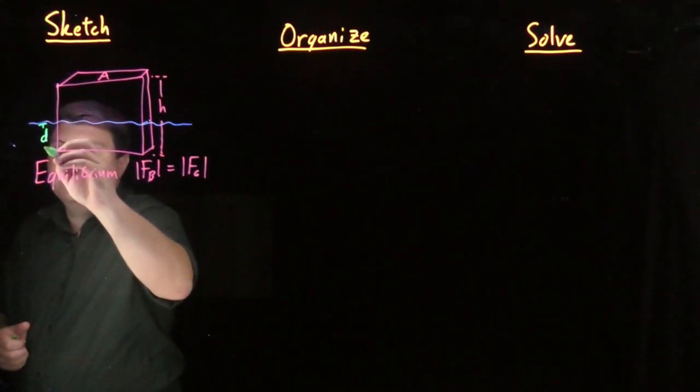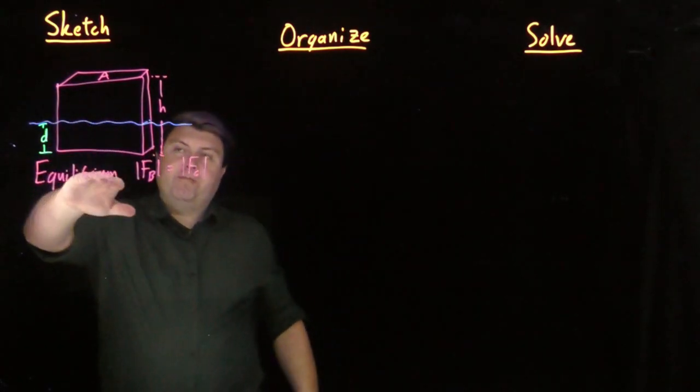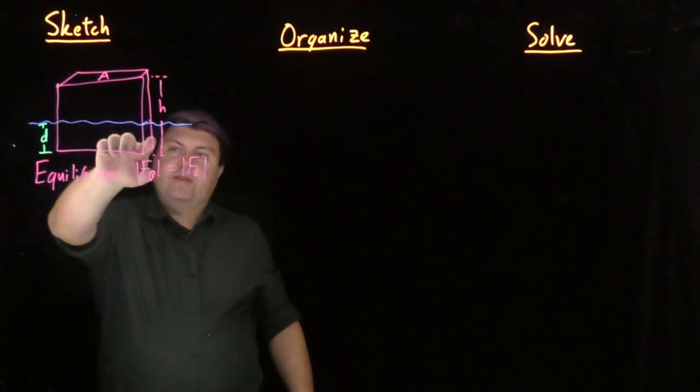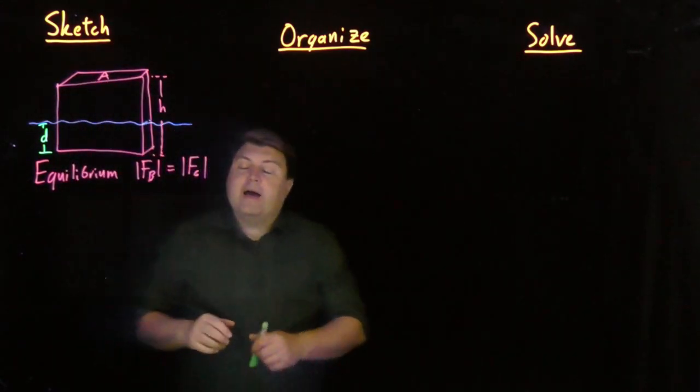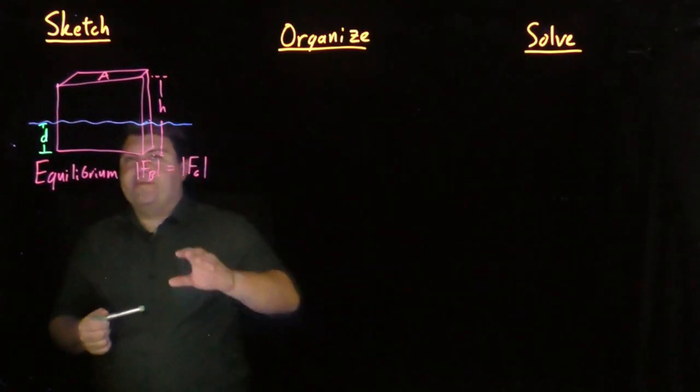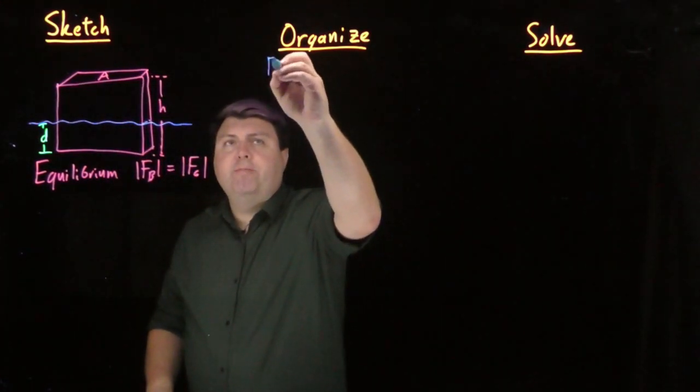So our styrofoam is going to be some amount of depth underneath the water which we can call this d. So if we're in equilibrium, our buoyancy of the submerged styrofoam will equal the force of gravity of the entirety of it. So we can write this in our organized step: for equilibrium...